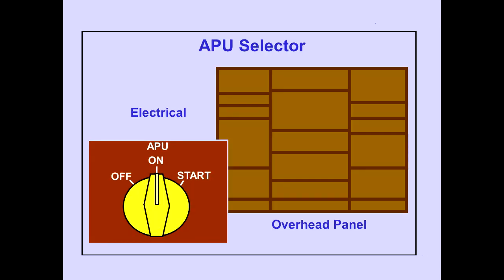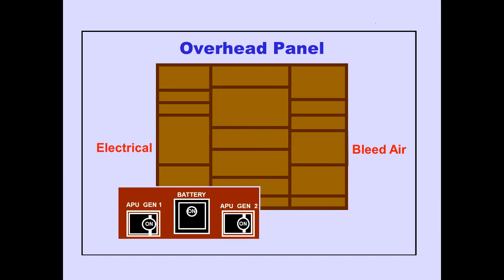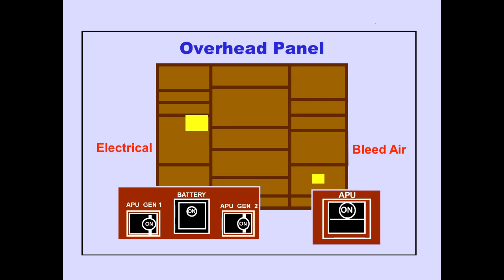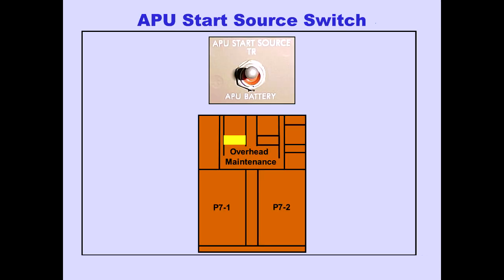The APU selector is located on the electrical panel. The APU generator control and battery switches are also located on the electrical panel. The APU bleed air switch is located on the bleed air panel. An APU start source switch is located on the overhead maintenance panel, allowing a transformer rectifier unit or APU battery to be selected for start.